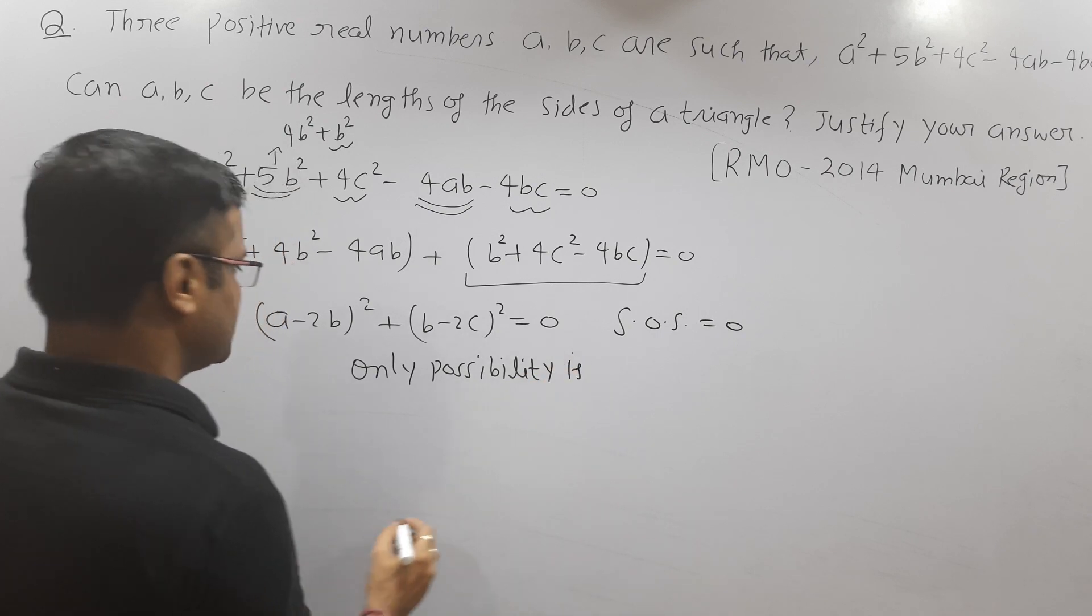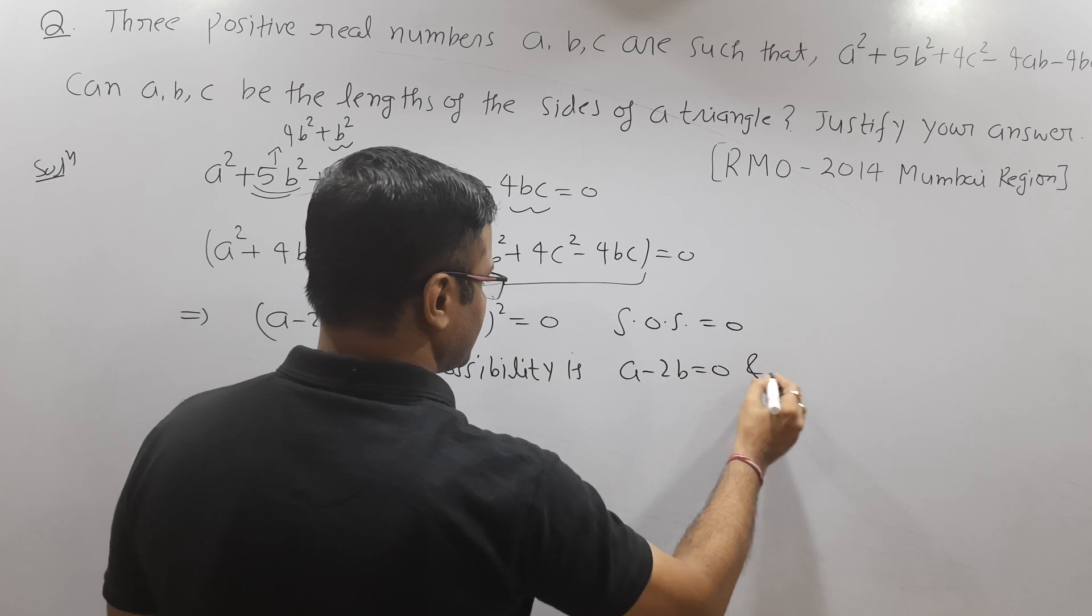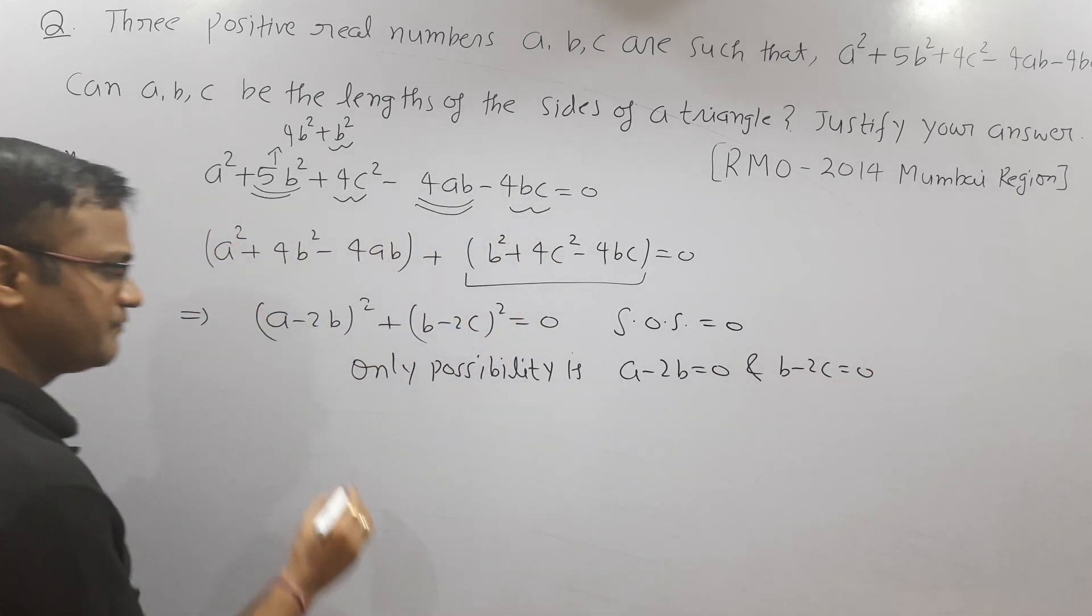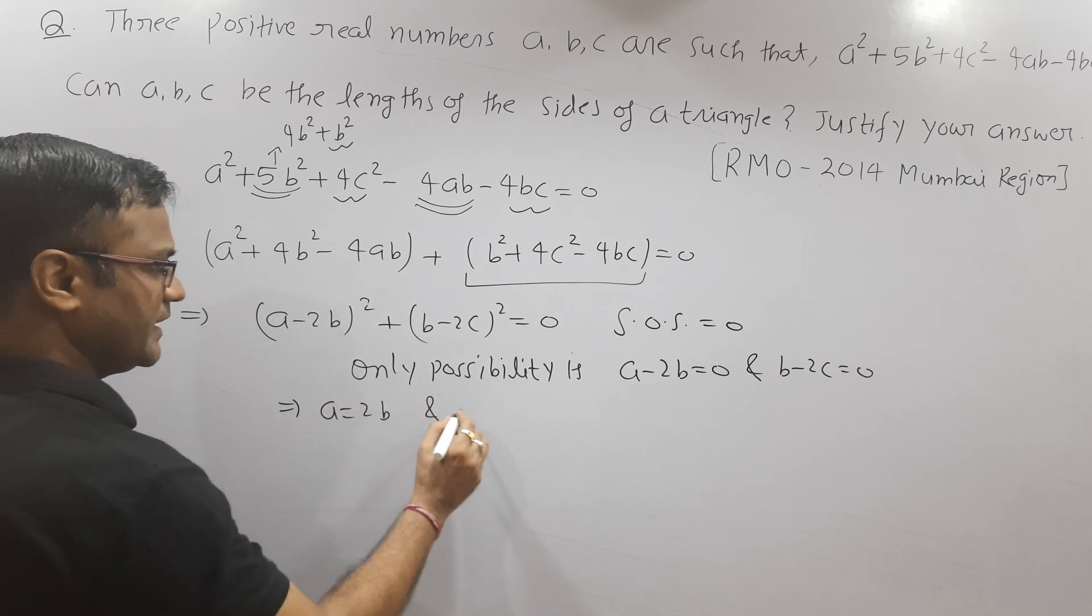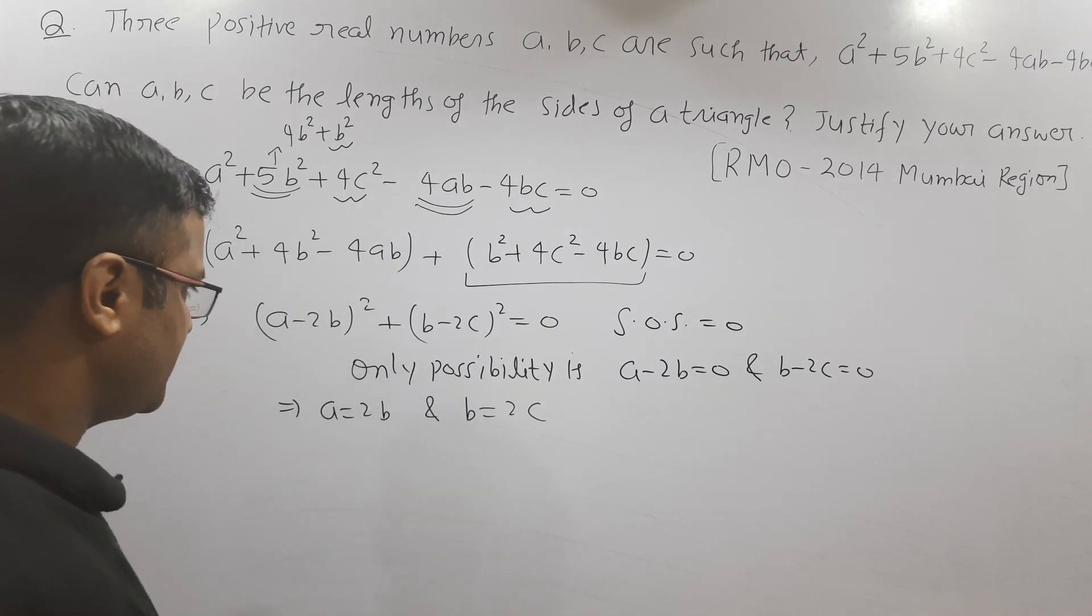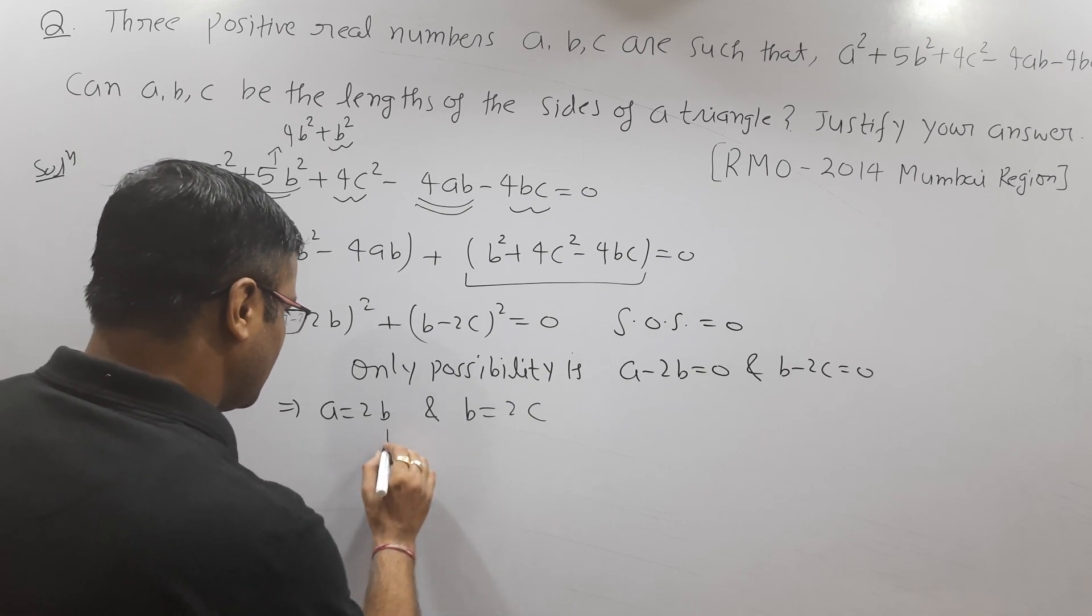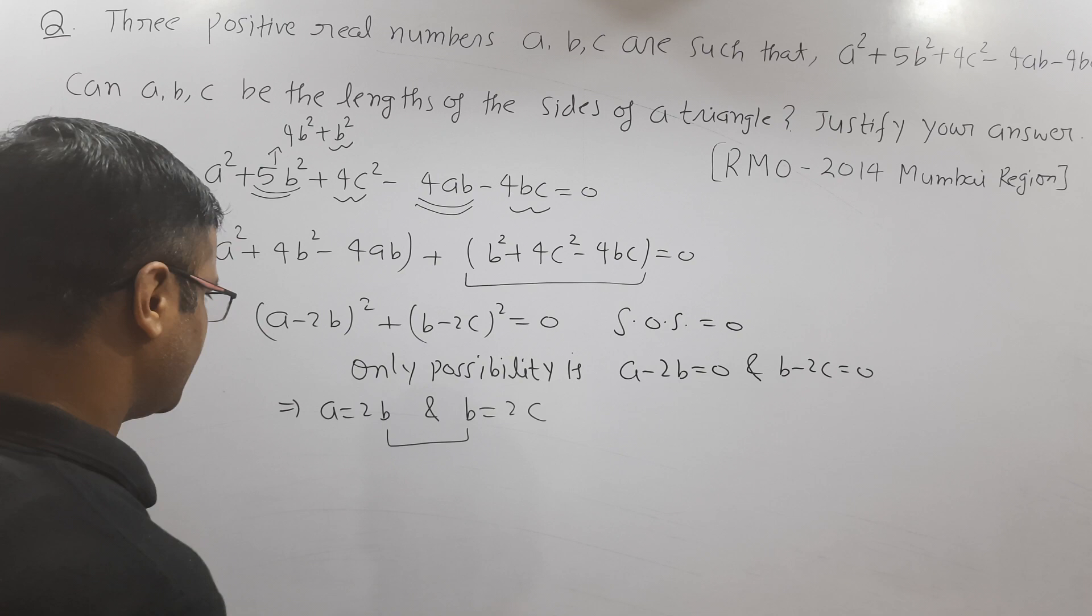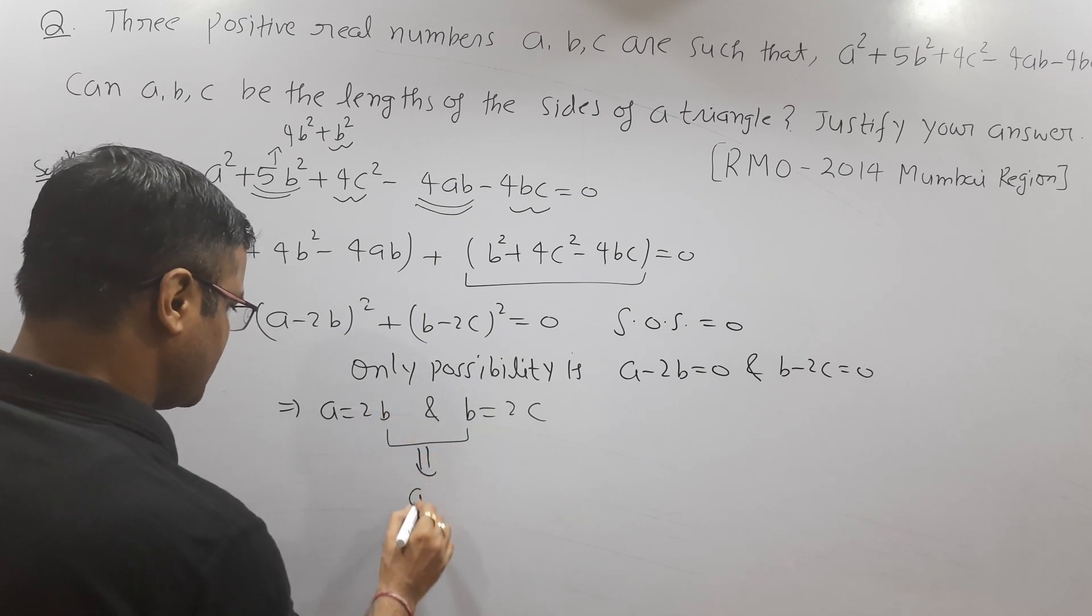This will imply a = 2b and b = 2c. If we want to establish a relation between a and c, I am going to eliminate b. Put b = 2c here, then I can write a = 4c.